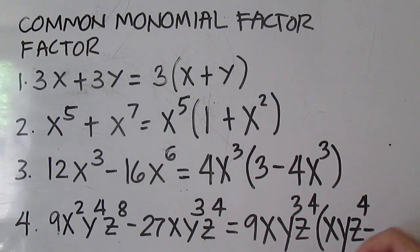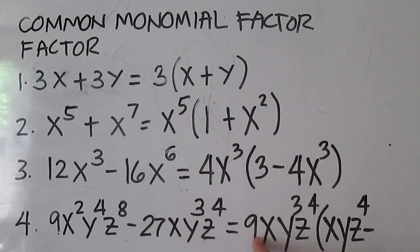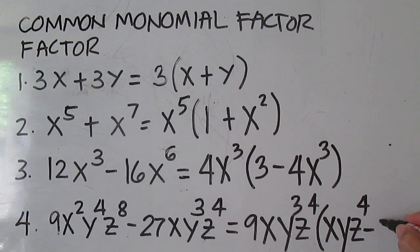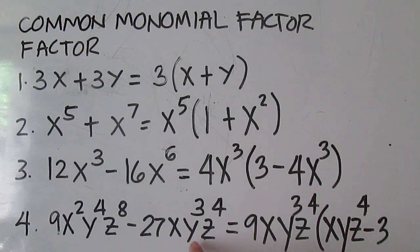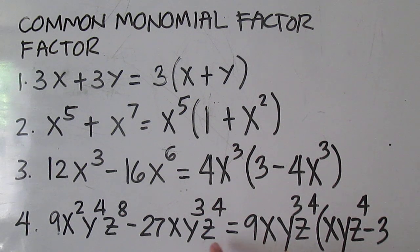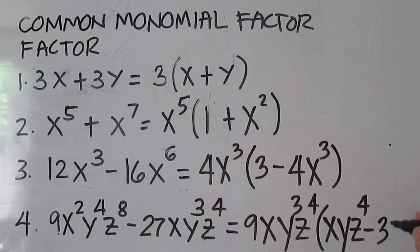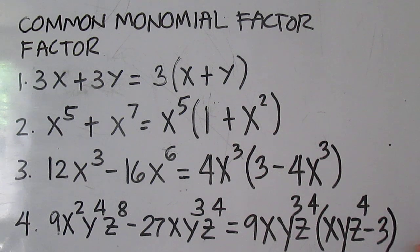Then, negative 27 divided by 9 is 3; x and x gives 1; y cubed and y cubed gives 1; z to the power of 4 and z to the power of 4 gives 1. So this is your answer.